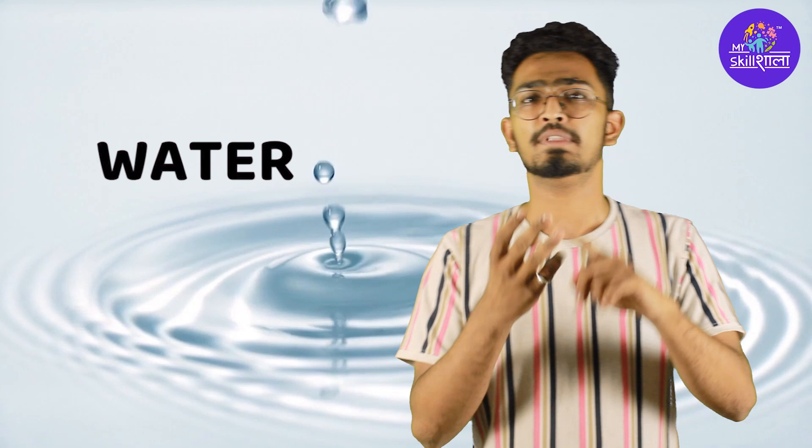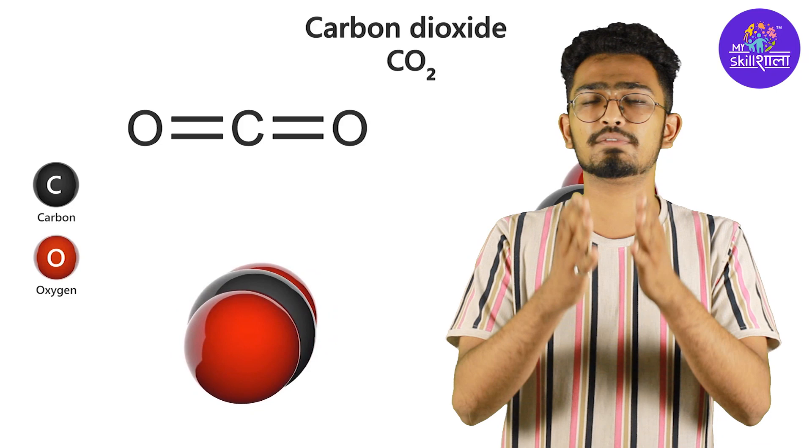Firstly, the water is collected from the soil through their roots. Secondly, carbon dioxide, which is a gas found in air — plants can collect this from tiny holes present in the leaves. Once carbon dioxide and water are collected, the plants then need energy from sunlight.